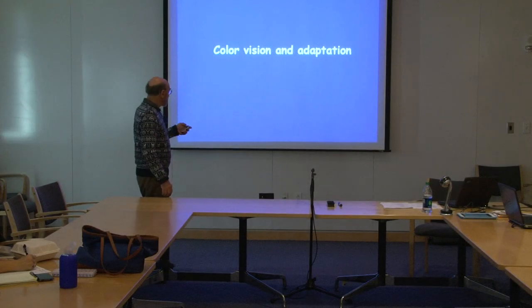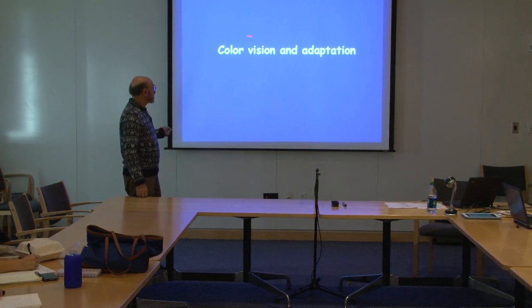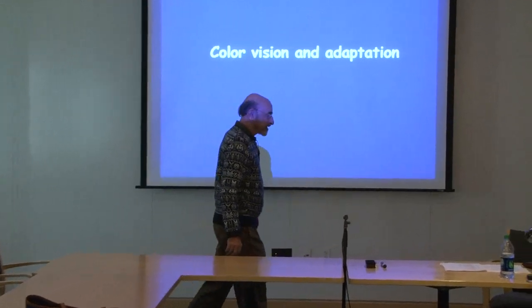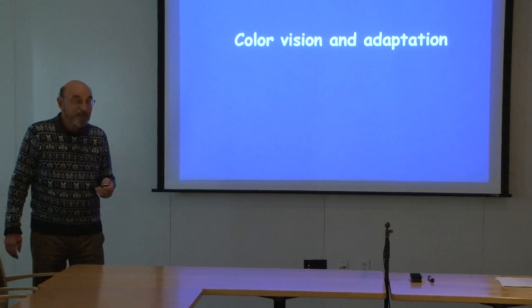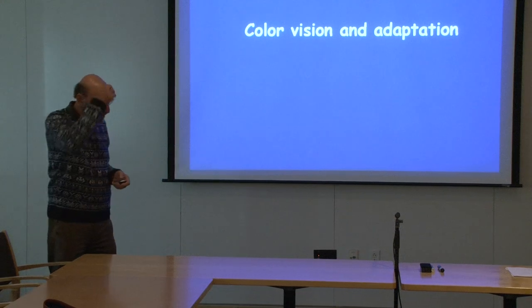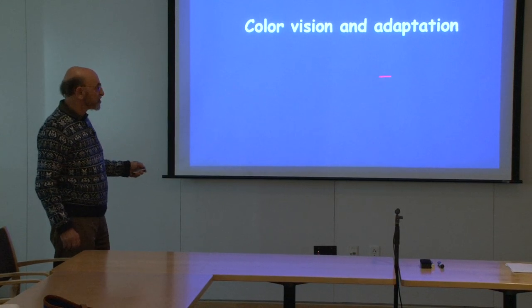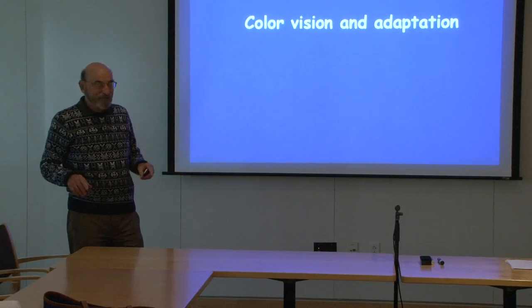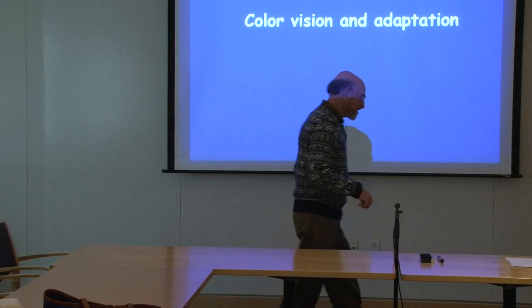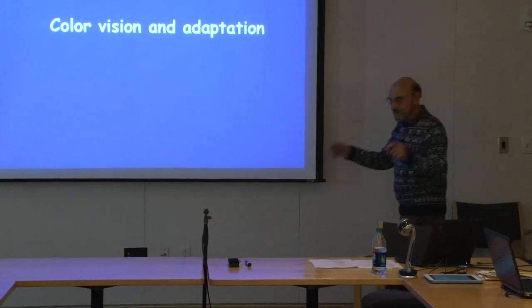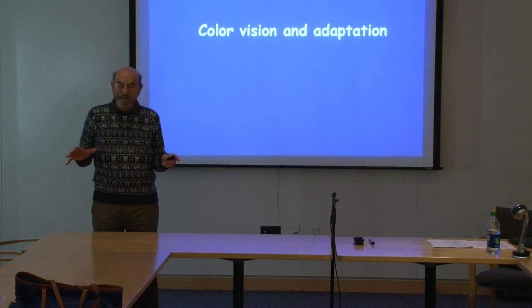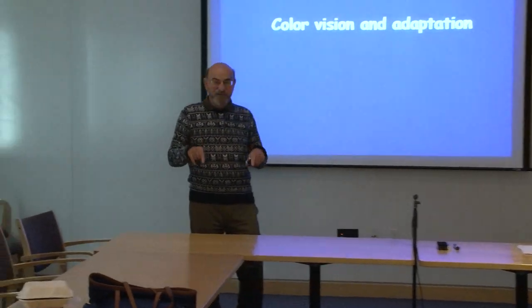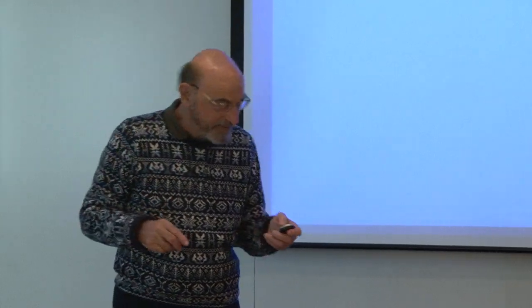Today we are going to discuss color vision and adaptation — about two thirds on color vision and one third on adaptation. I'm going to have several demonstrations on the screen. The light bulb in this projector still hasn't been fixed, so you'll see a bluish color — it's supposed to be gray. The demonstrations will also be available on the internet and on Stellar, where you may get a better picture.